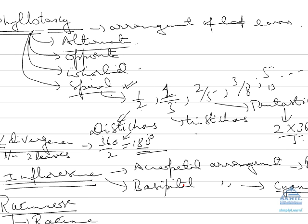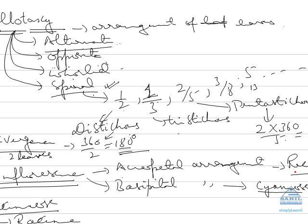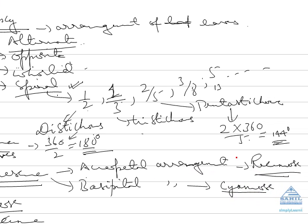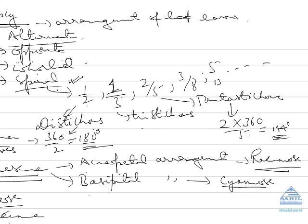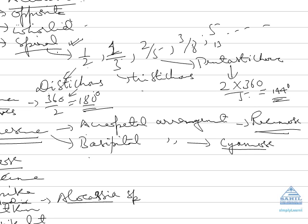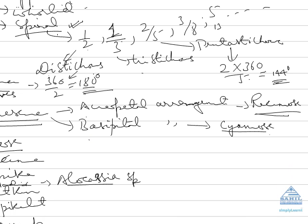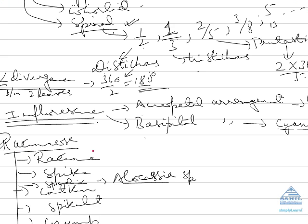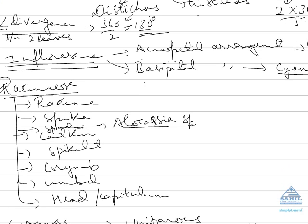Now coming to inflorescence. Inflorescence is the arrangement of flowers on the main stem or flowering axis or rachis. Now there are two types of arrangement. Acropetal arrangement is known as racemose inflorescence, and if the flowers are basipetal, then we call it cymose inflorescence. Basipetal means the young flower is at base.